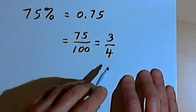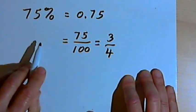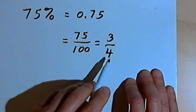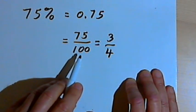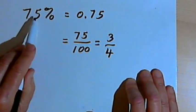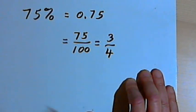And again, I could reverse this process also, turn 3 quarters into 75 over 100, and then take that 75 over 100, and turn it into 75%.